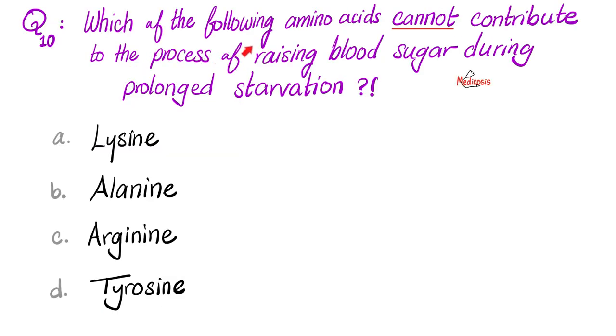Last question. Which of the following amino acids cannot contribute to the process of raising blood sugar during prolonged starvation? Is it lysine, alanine, arginine, or tyrosine? Let me know your answer in the comments. You will find the answer key in the next video, which will be titled 5 biochemistry questions. You will also find that video in this biochemistry playlist, as well as in the other playlist titled MCAT and DAT questions.